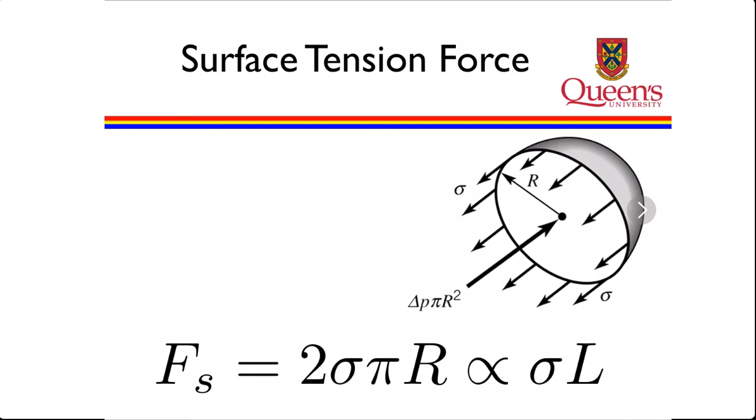We can look at surface tension forces as well. If we have a drop here with it cut in the middle, we've got a surface of a given length, and we've got a force acting this way due to surface tension. That surface force will be 2 times pi times the radius of the drop. That's the circumference around here times the surface tension sigma. Or if we just are interested in proportionality, it will be proportional to the surface tension and the length scale.